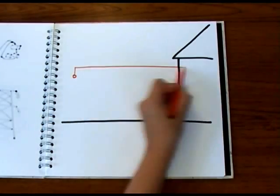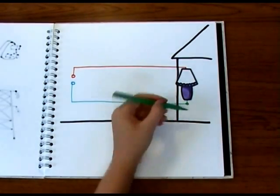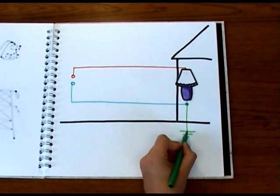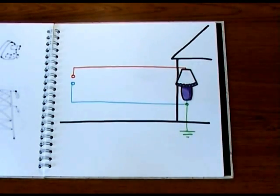To make things safer in the home, the neutral side of the circuit is also connected to the ground. This is known as earthing the circuit. And it means that if a live cable touches the case of your toaster or the oven, the current drains harmlessly away.